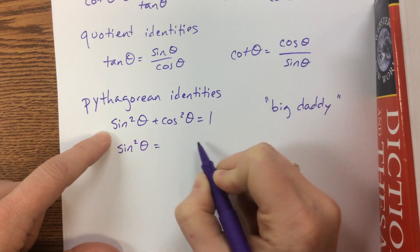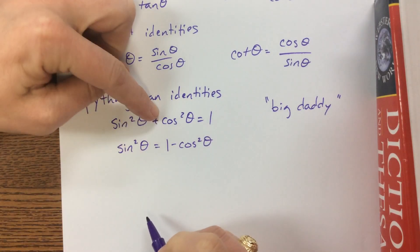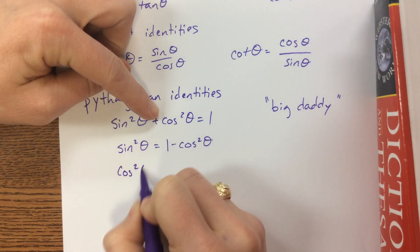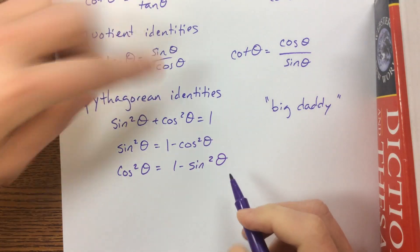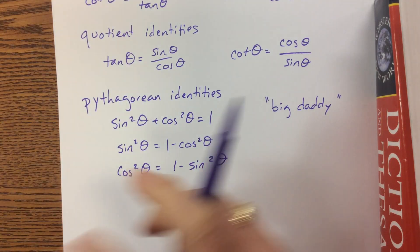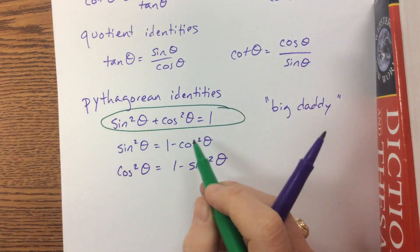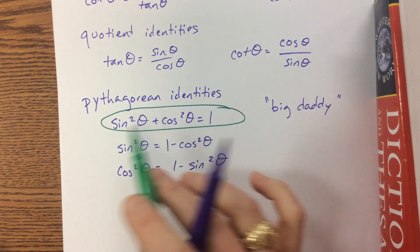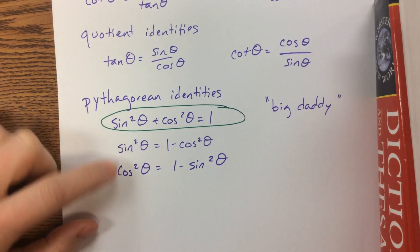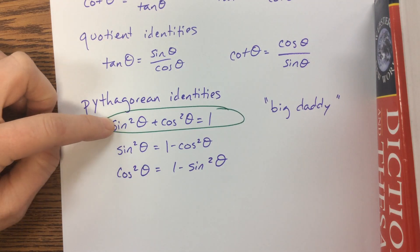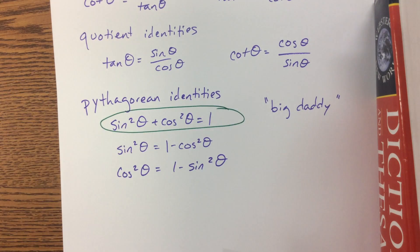Sometimes it's helpful to solve for either sine squared or cosine squared. I may say sine squared theta equals one minus cosine squared theta, or cosine squared theta equals one minus sine squared theta. You absolutely have to know the big daddy — everything comes from that. Whether you have these other two rearrangements memorized is your choice; you can easily generate them from the first one.